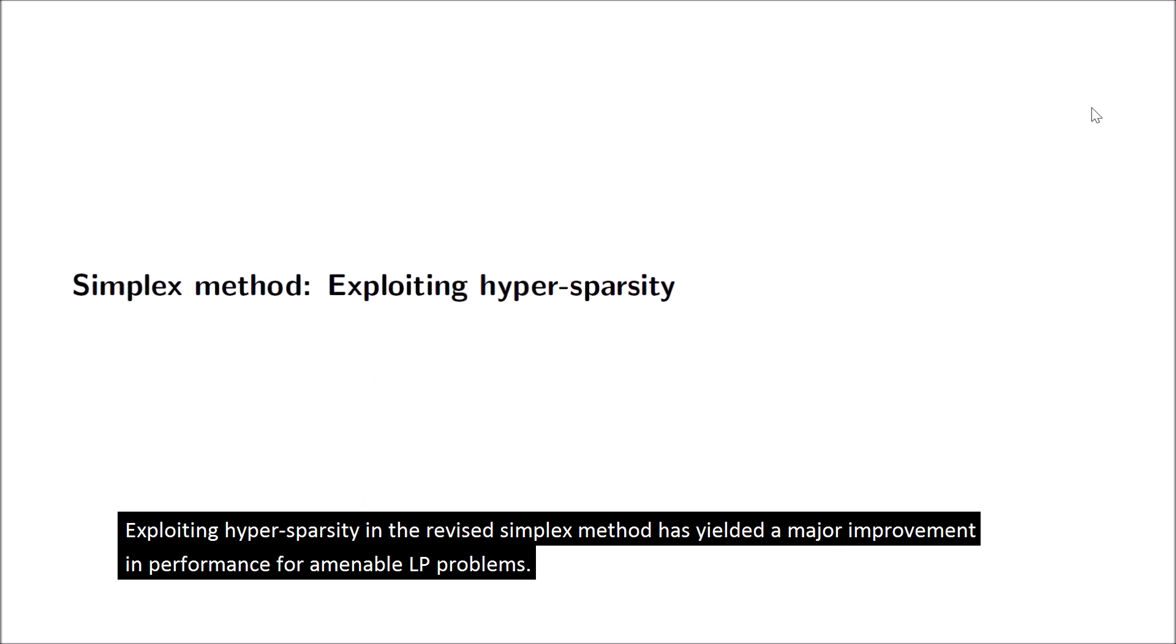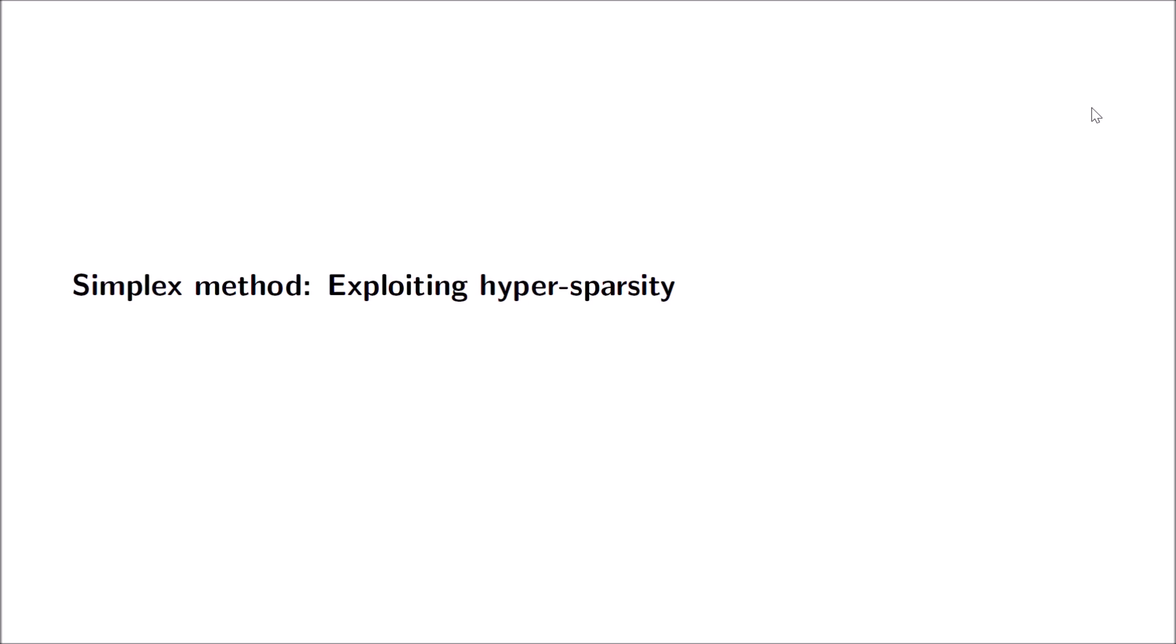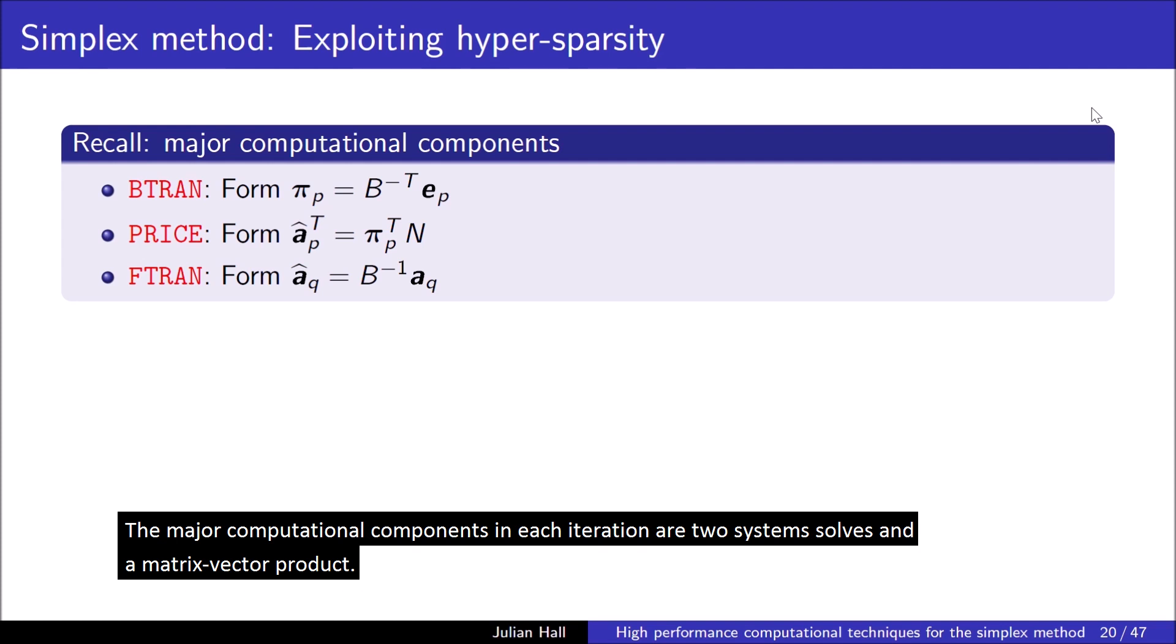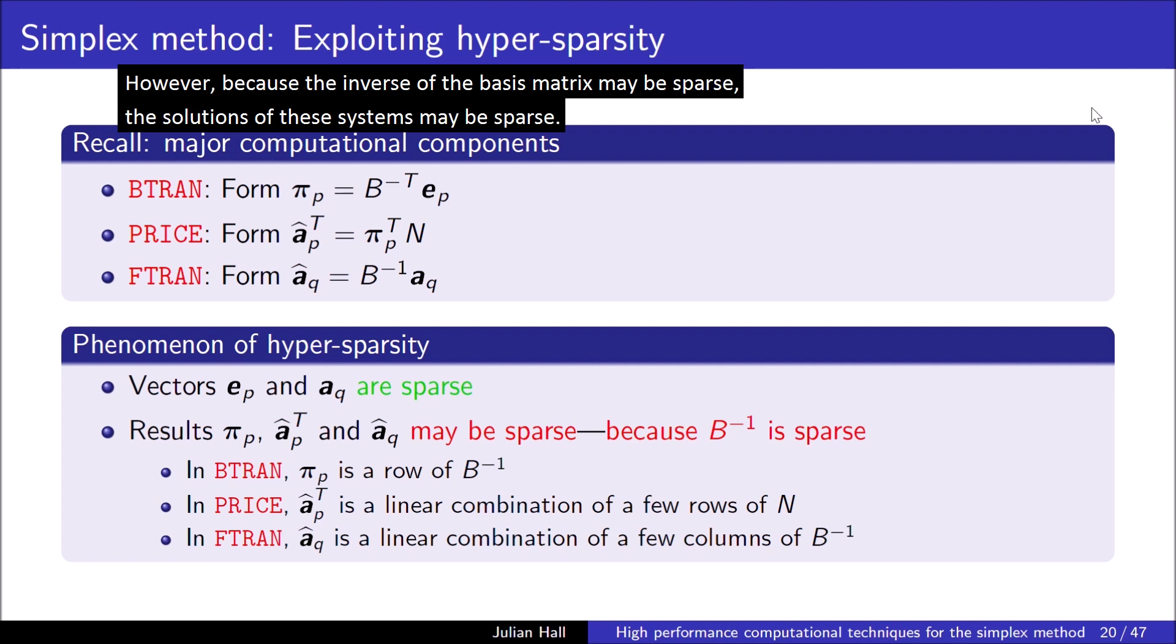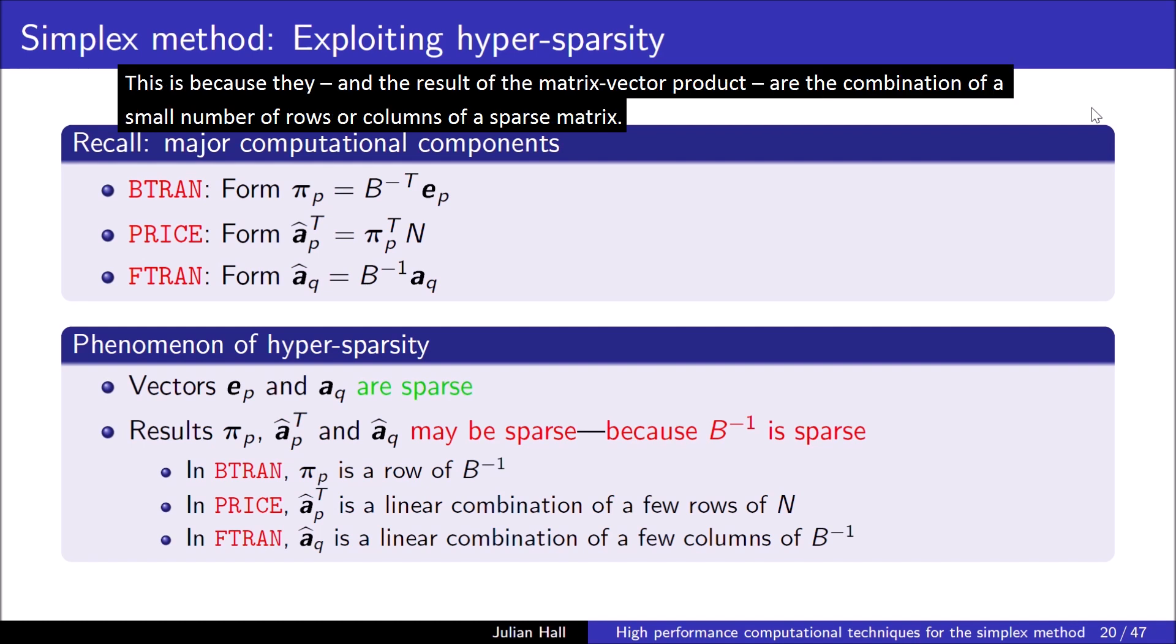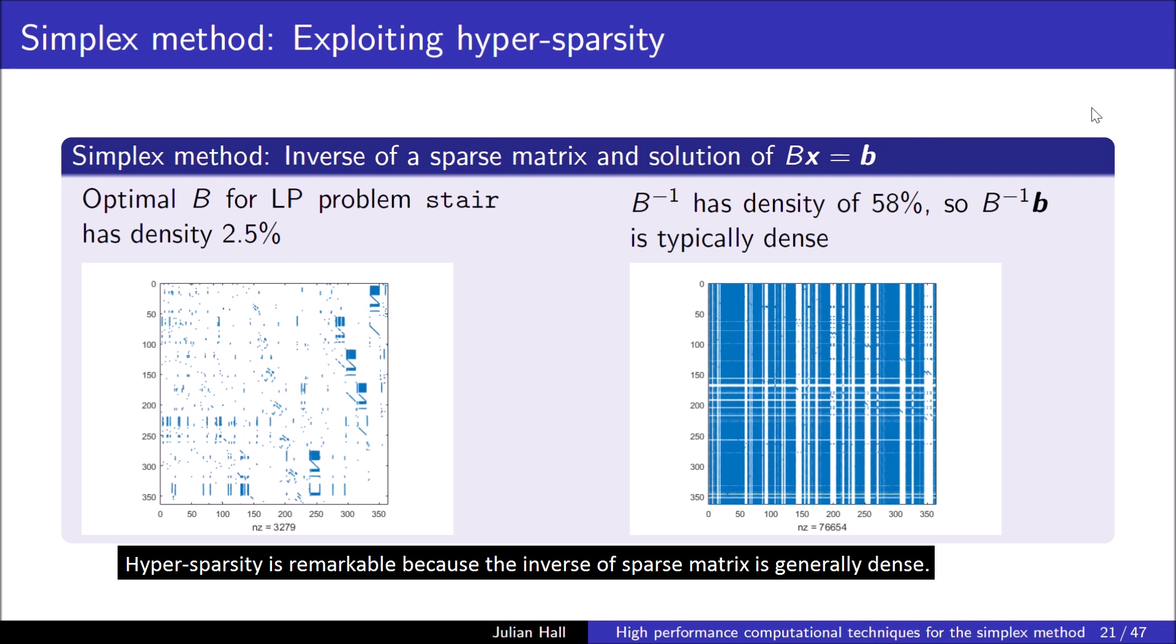Exploiting hypersparsity in the revised simplex method has yielded a major improvement in performance for amenable LP problems. The major computational components in each iteration are two system solves and a matrix vector product. The right-hand side vectors of the linear systems are sparse, being a column of the identity matrix and a column from the constraint matrix. However, because the inverse of the basis matrix may be sparse, the solutions of these systems may be sparse. This is because they, and the result of the matrix vector product, are the combination of a small number of rows or columns of a sparse matrix.